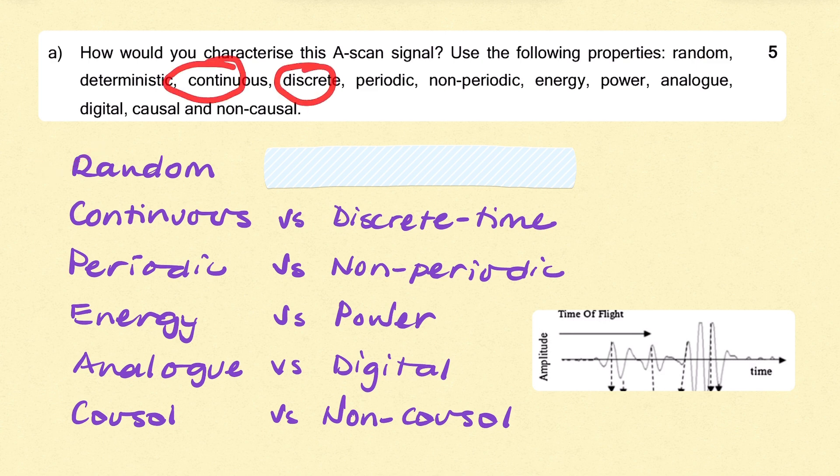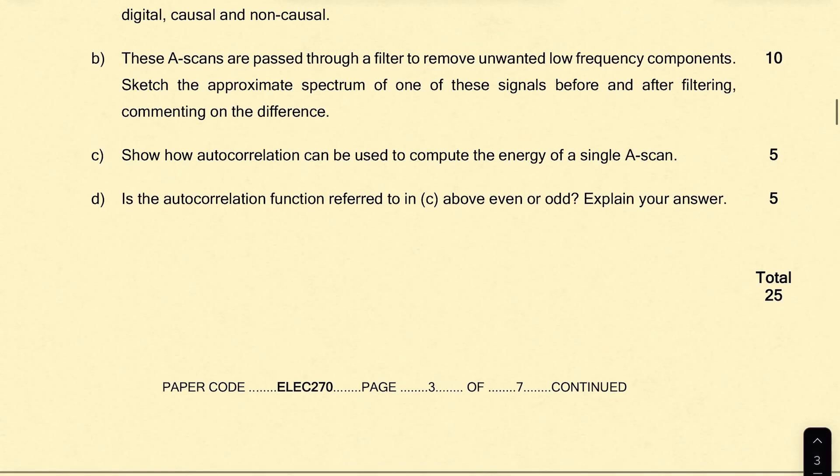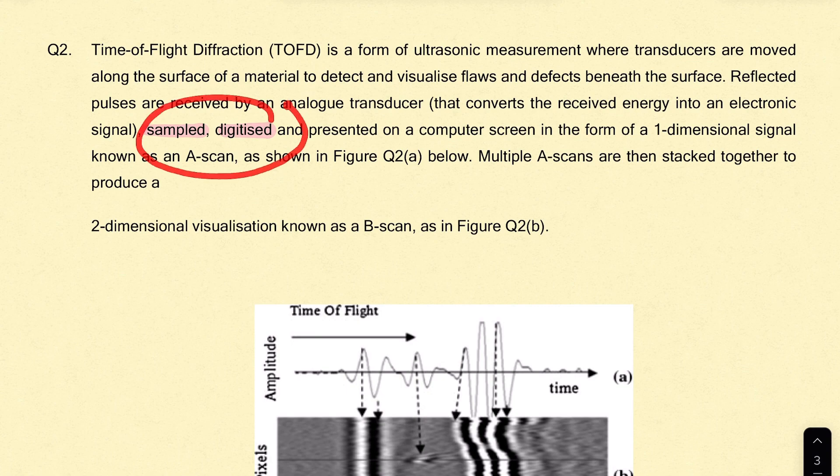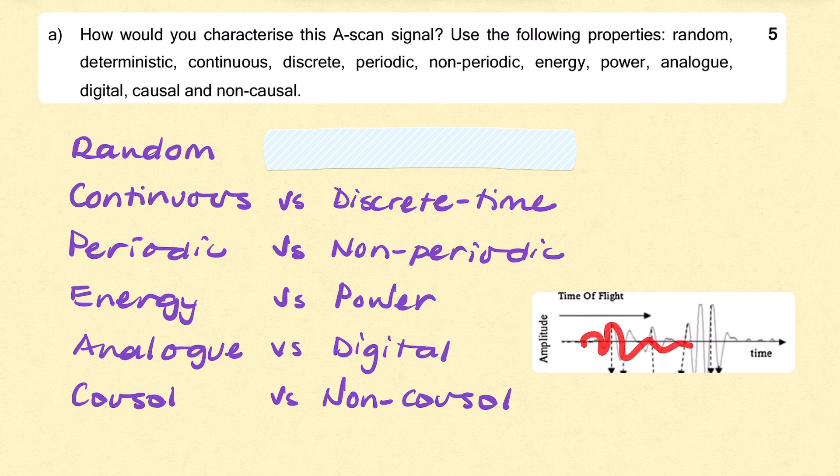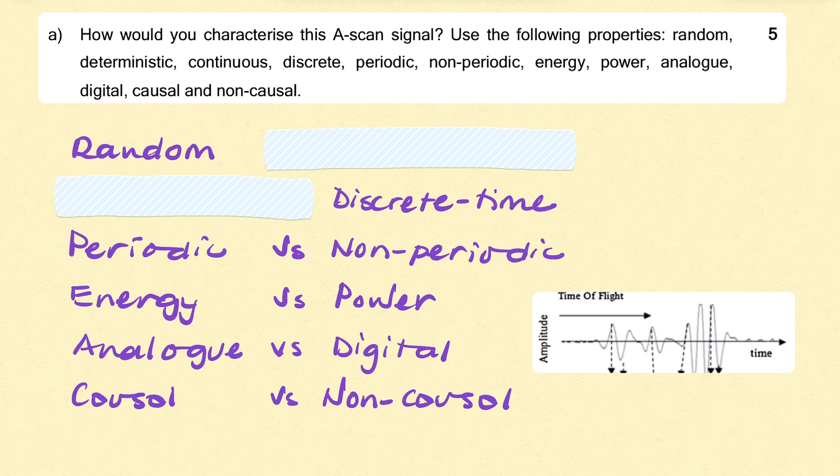Now, is it continuous or discrete? Well, it looks continuous in time, it looks very continuous. But remember the question mentioned that it was sampled and digitized. So even though it's being presented on the screen as a continuous signal, it's not continuous. It's a discrete time signal because it's been sampled. It's a discrete time signal that's been plotted on the screen by simply connecting all the discrete samples. The sample rate is high enough that it still looks smooth to the person visualizing it, but it's a discrete time signal.